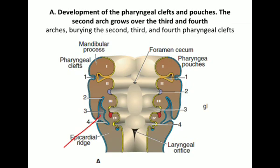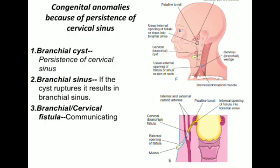If this cervical sinus persists then it will lead to formation of a branchial cyst. These branchial cysts are present along the anterior border of the sternocleidomastoid. You can see the branchial cysts along the anterior border of the sternocleidomastoid, and they are formed due to persistence of the cervical sinus.